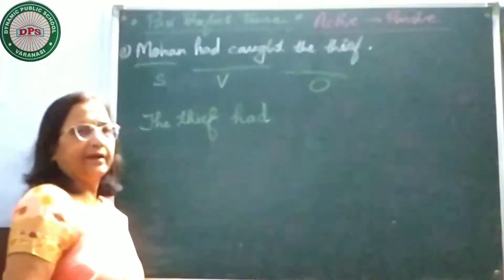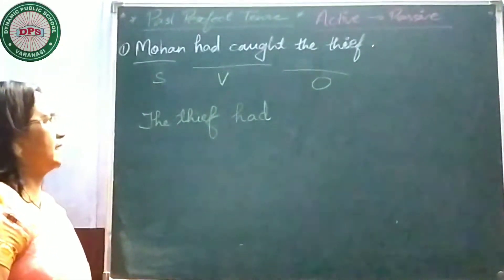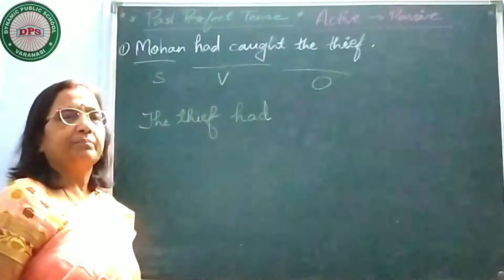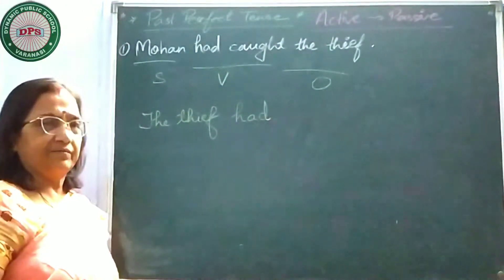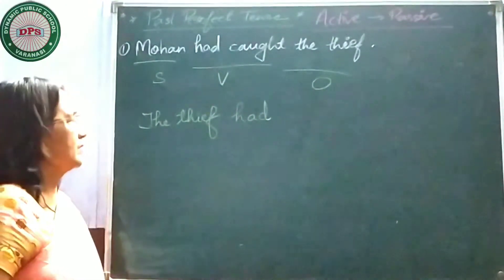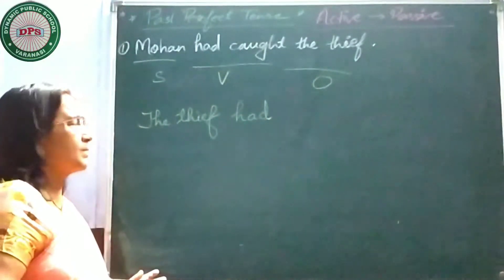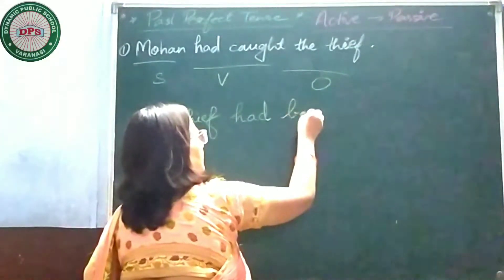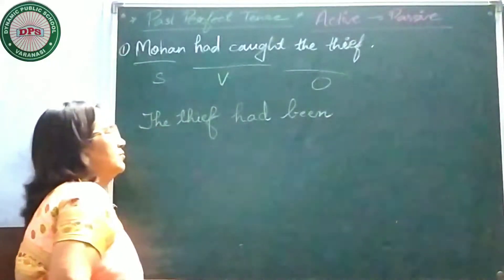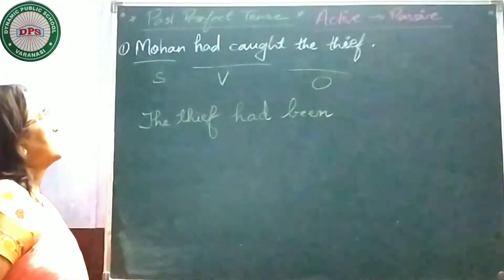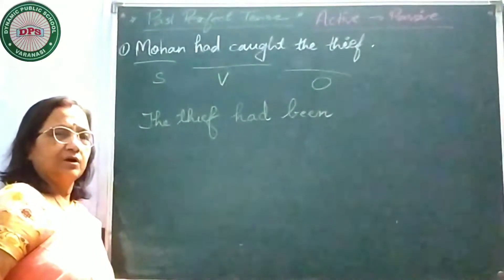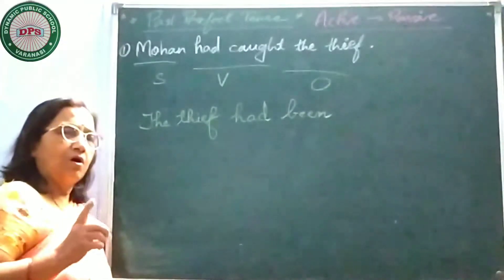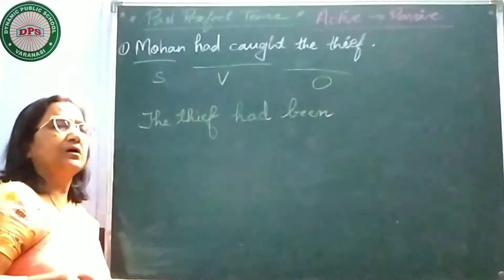As you have already studied in present perfect tense, you used 'been' with 'has' and 'have' in passive voice. You have to do the same thing here. So: 'the thief had been.' Now what is the main verb? 'Caught.' In passive voice you will always use the third form of the verb.